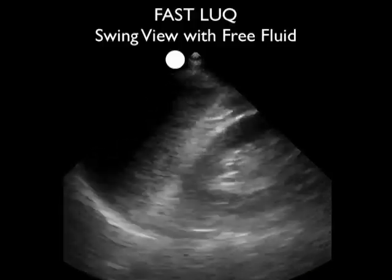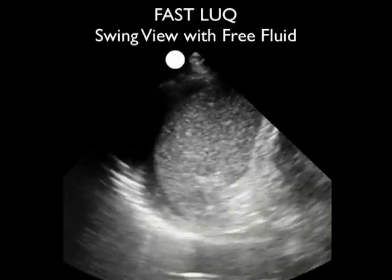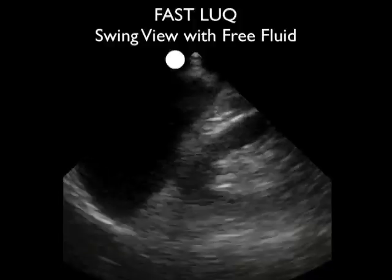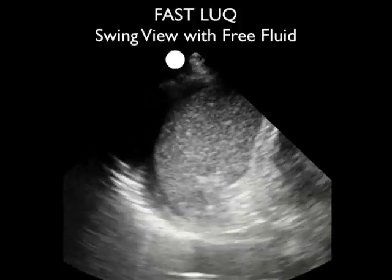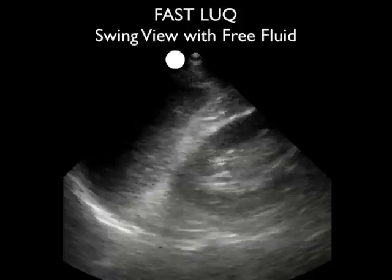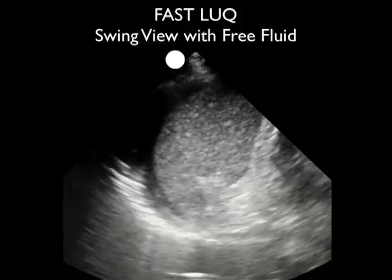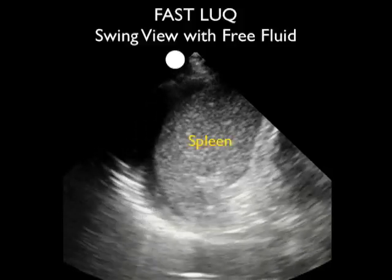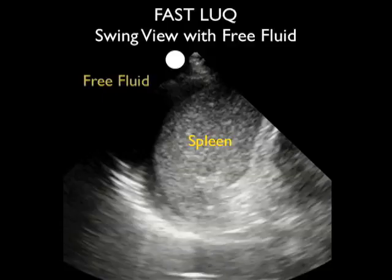Here's another positive examination in a patient who comes in hypotensive after being hit by a car. Notice I'm swinging the probe between the kidney up superiorly to look at the spleen. Notice the absence of fluid in between the spleen and the kidney, but the presence of free fluid right above the spleen and below the diaphragm, as indicated by that dark stripe.